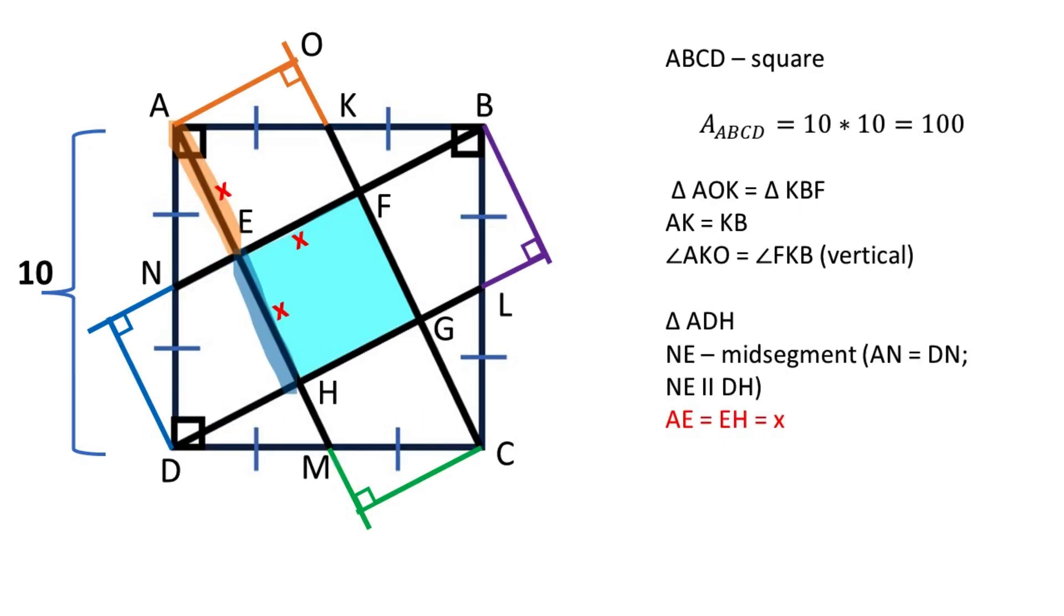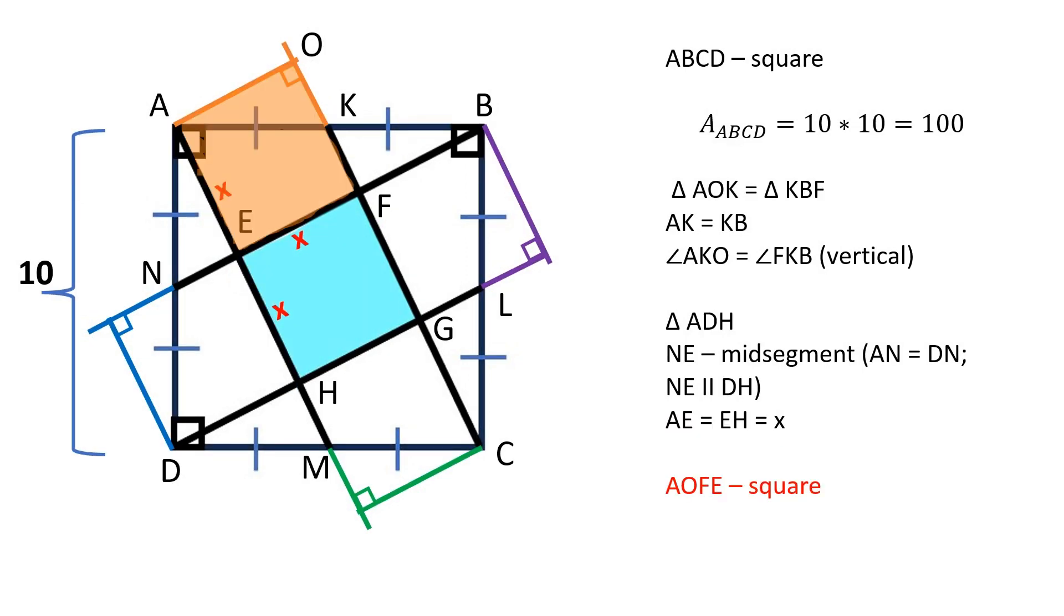AE is equal to EH and equal to X. AOFE is a square. This reasoning can be applied to every square.